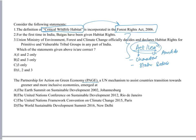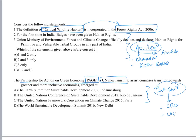The next question is related to PAGE — Partnership for Action on a Green Economy — a United Nations mechanism. This question is related to international conventions. Earlier UPSC generally focused on conventions like CBD, UNFCCC — for example, the Cartagena Protocol, Nagoya Protocol, Annex 1 and Annex 2 countries. UPSC has also asked about REDD+ mechanism and the United Nations Convention to Combat Desertification.